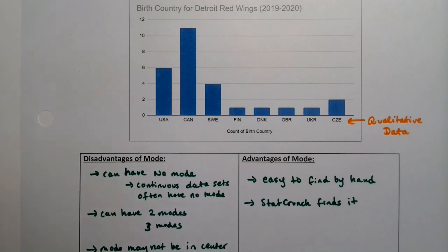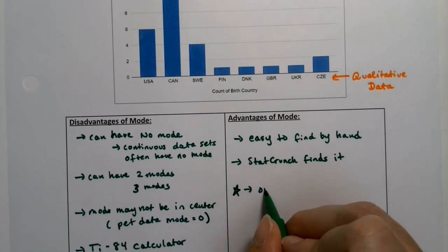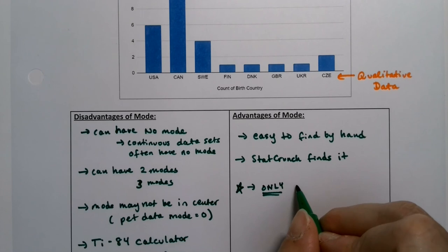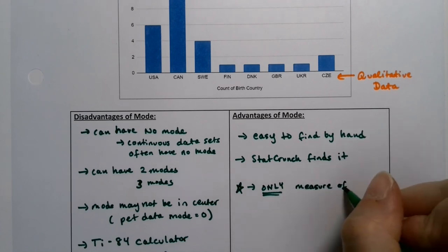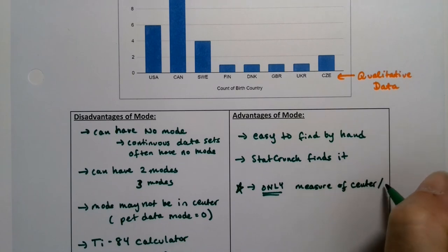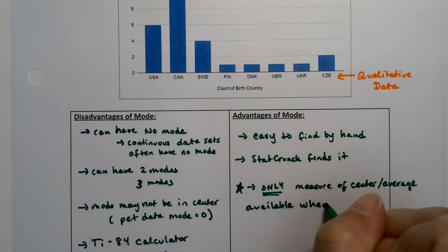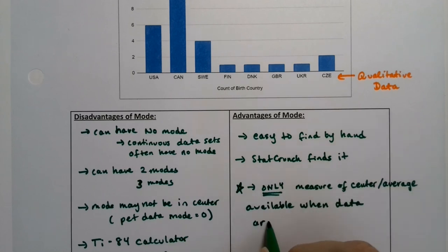So that real big advantage, the real reason we have to know it, is it's the only method of center, or measure of center, or average, available to us when the data are qualitative. Or if you remember, we learned nominal, same thing. Qualitative or nominal.